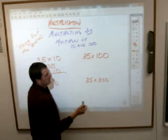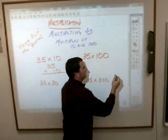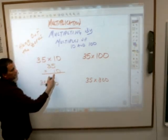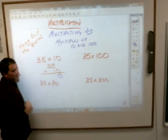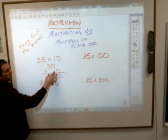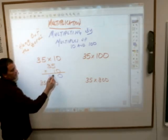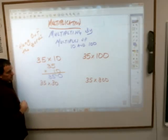The reason they want you to do that is simply this: you can just take that zero, you don't really have to do anything with it except bring it straight down, and then multiply by this one right here. One times 35 is 35.